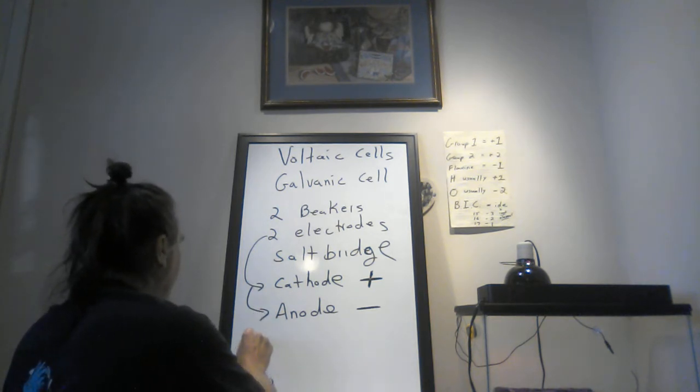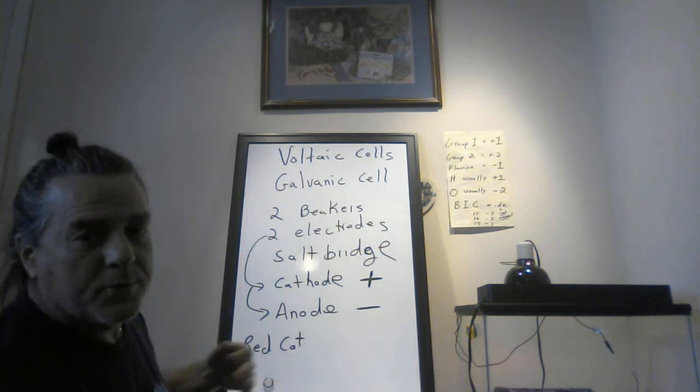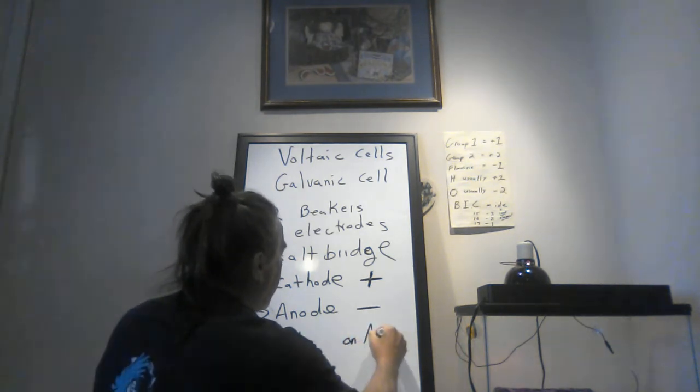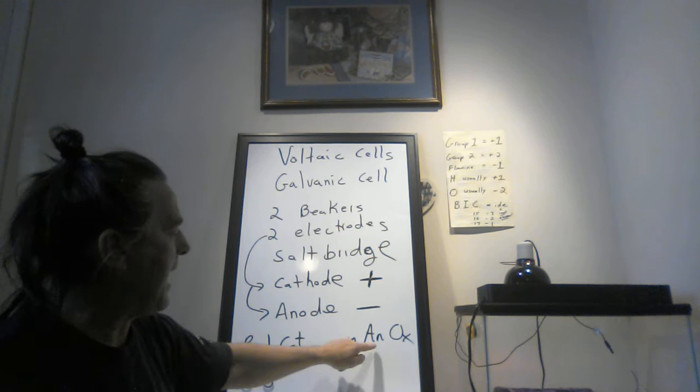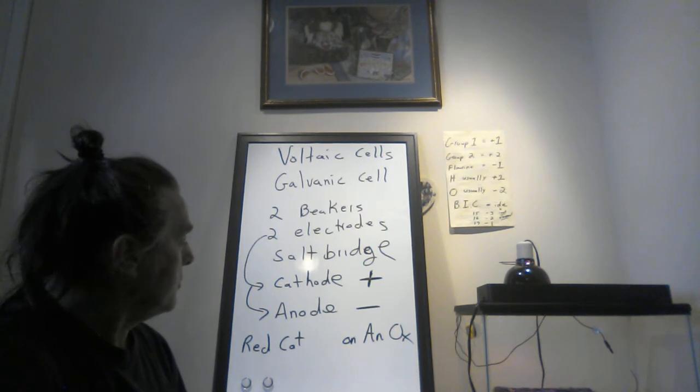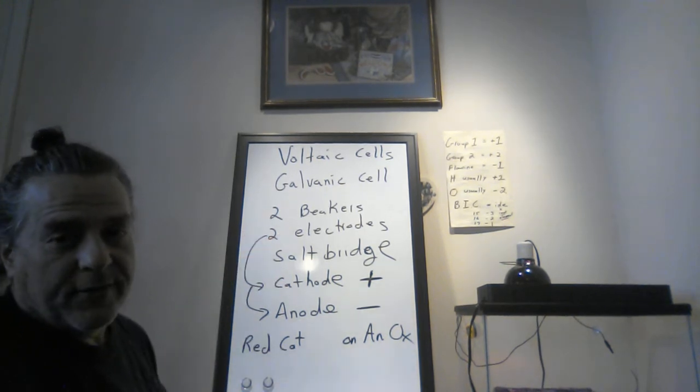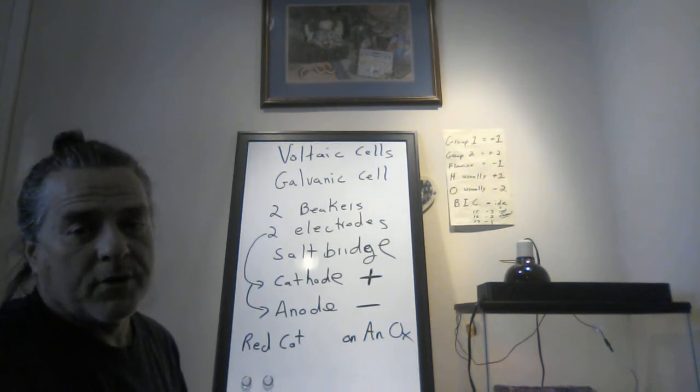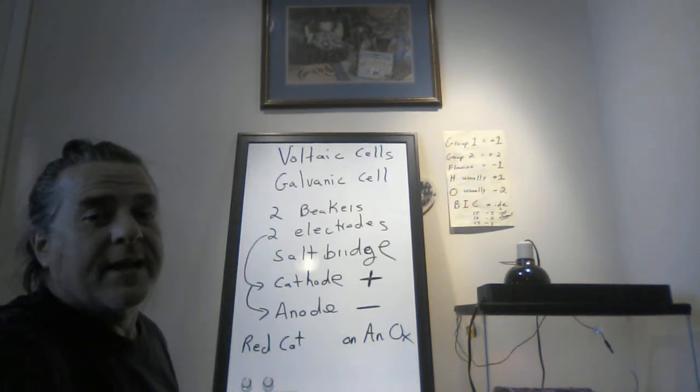So we have two electrodes, cathode and anode. And just remember, red cat sits or sleeps on an ox. And this is going to be true for both systems. It's reduction, cathode, anode, oxidation. If you want to amuse yourself later on, go onto the internet and put red cat anox. And images will come up, discussions of batteries and stuff like this. This is a commonly used device to try and remember the difference between what occurs at the cathode and the anode.